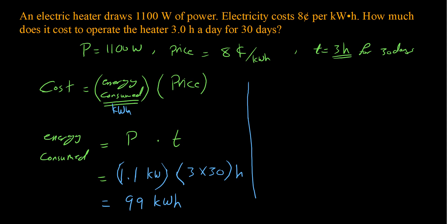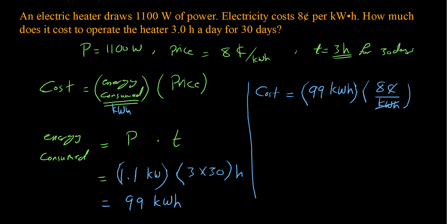I've now found the energy consumed — 99 kilowatt hours. So the cost is 99 kilowatt hours multiplied by the price of 8 cents per kilowatt hour. The kilowatt hour units cancel, giving me 792 cents. Converting to dollars, that's 7.92 dollars — the cost of running this heater three hours per day for 30 days at this price.